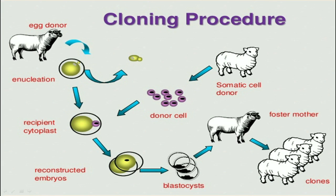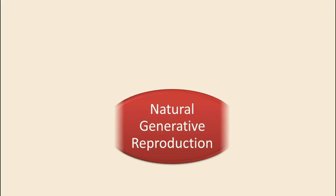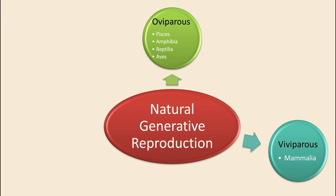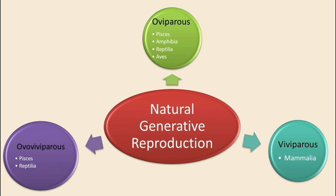There are three types of natural generative reproduction: oviparous, viviparous, and ovoviviparous.